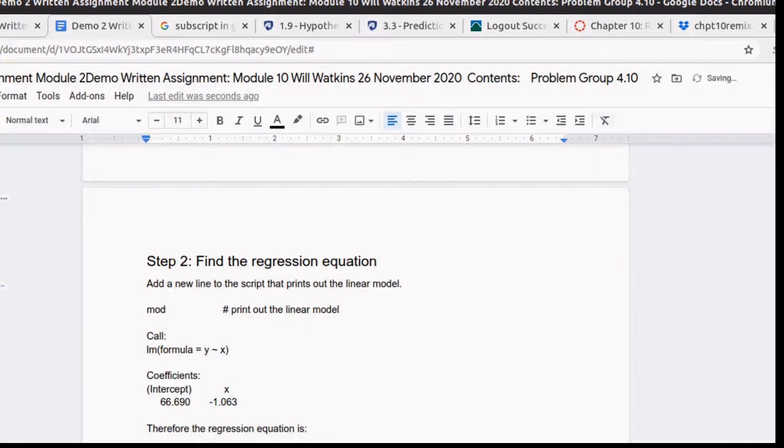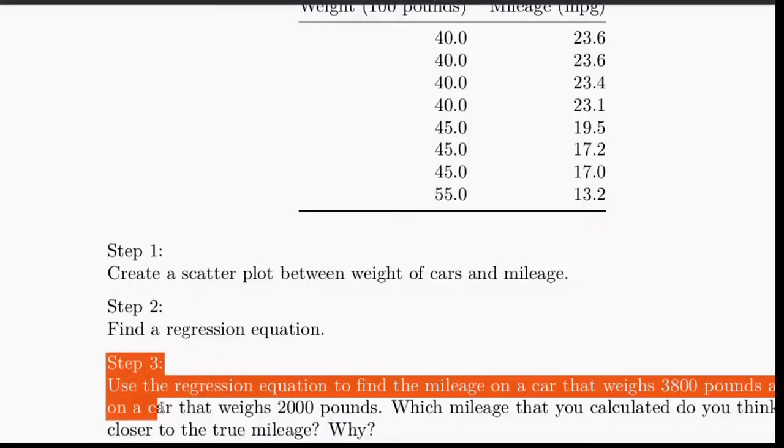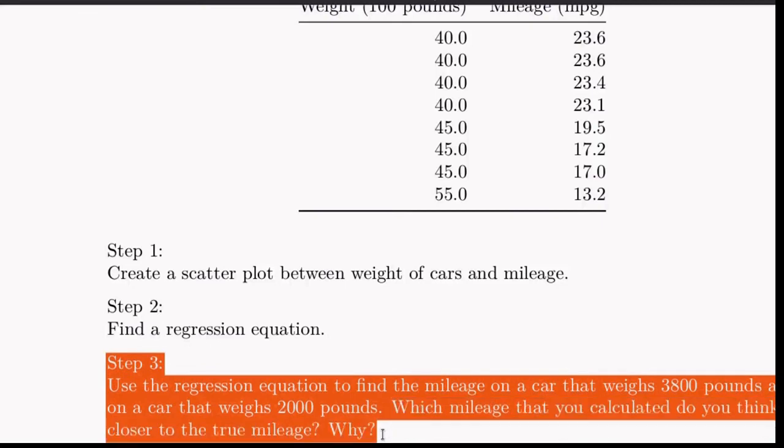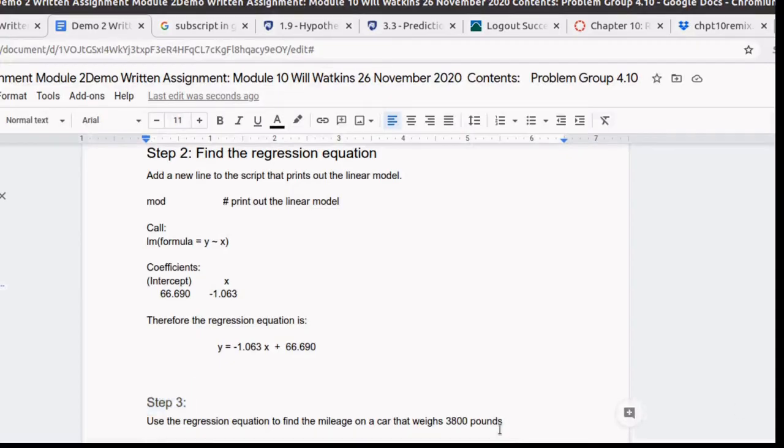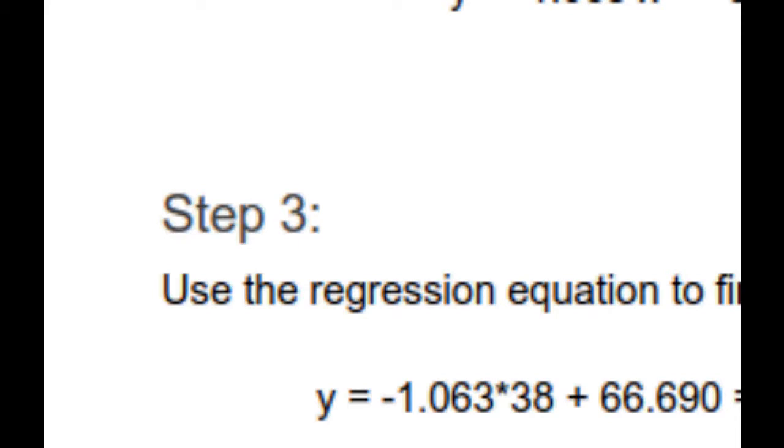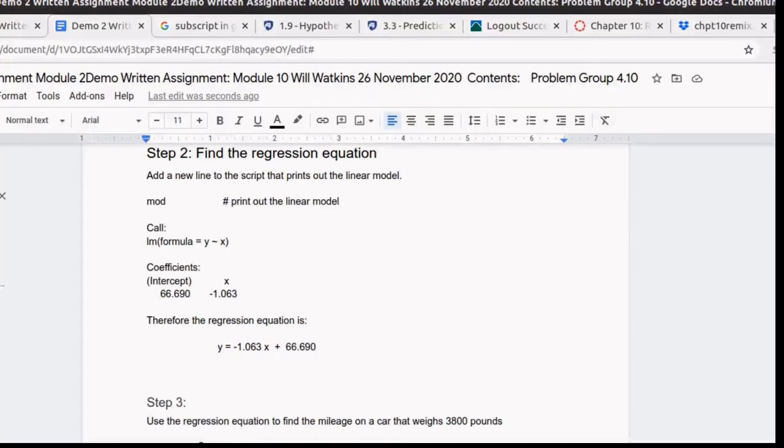Let's go on to step three. So there's step three. It wants us to do three things. And so the miles per gallon, y, is going to be negative 1.63 times x. 3,800 pounds is 3,800 pounds. Remember x is being measured in hundreds of pounds plus the 66.690. And we need to calculate that amount. I think that I could just take that particular equation and copy it.